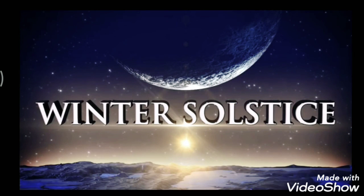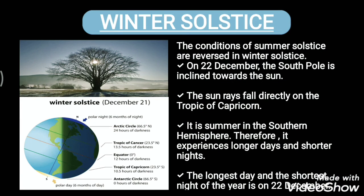In the same way, we have the winter solstice. On 22nd of December, the South Pole is inclined towards the Sun — the opposite of what happens on 21st of June. The conditions of the summer solstice are reversed in the winter solstice. The dates can also vary: the summer solstice may fall on 20th, 21st, or 22nd of June, and the winter solstice on 22nd or 23rd of December.